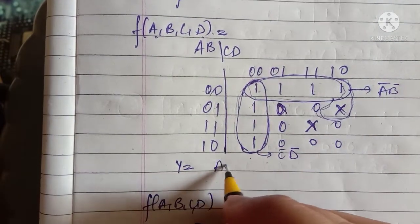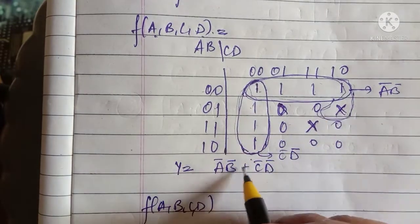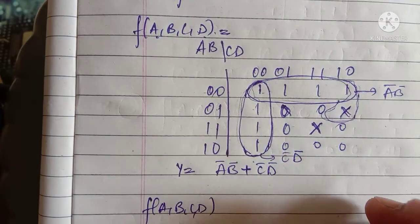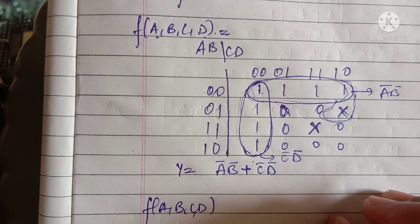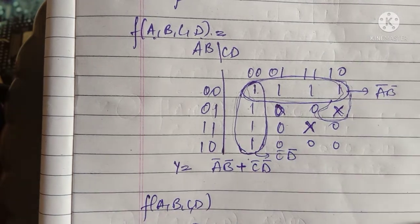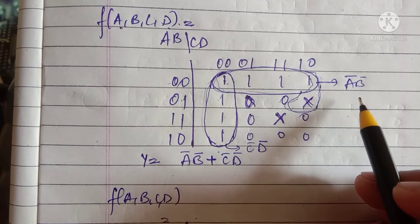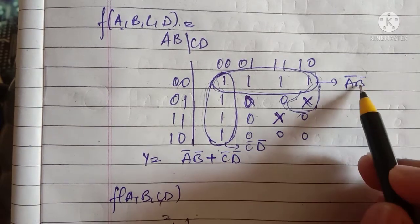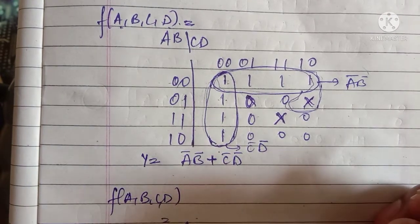For this group, the corresponding variables are A-bar B-bar, and this will be C-bar D-bar. So we write A-bar C-bar. Always write B first in the SOP form. When four bits form a group, there will be only two variables in the result. When eight bits form a group, there will be only one variable. In a four-variable K-map, forming a pair of four means we are out of four variables, neglecting two — like C and D are not common in this group.